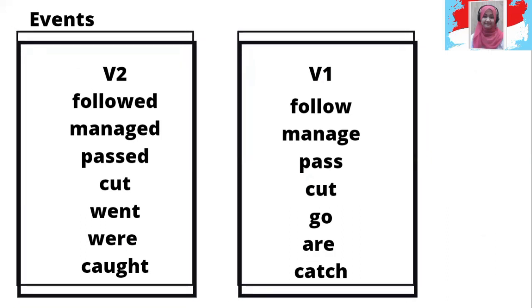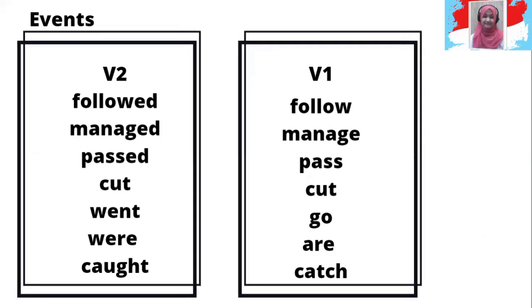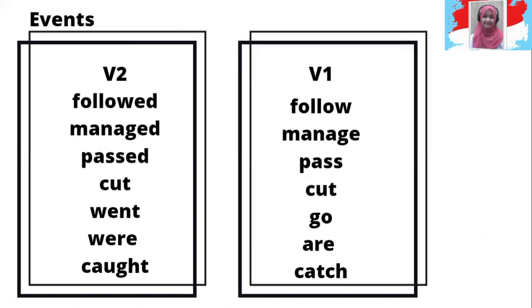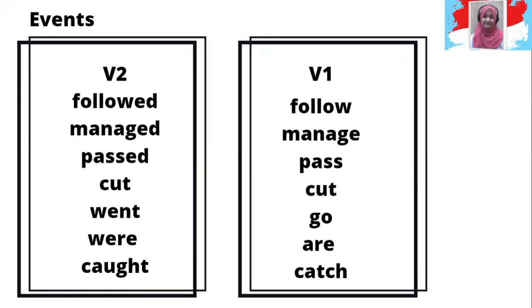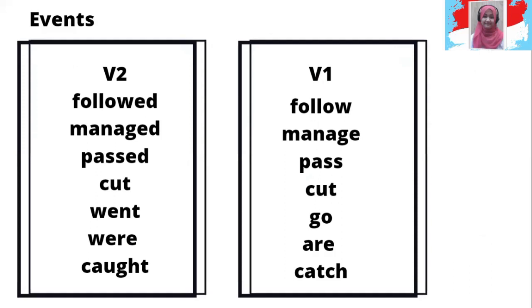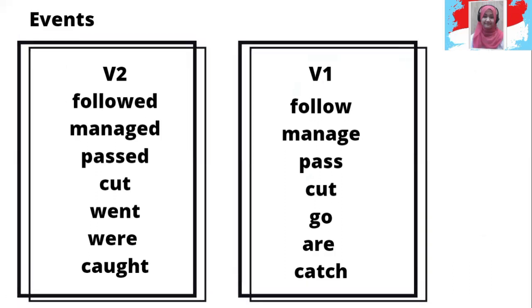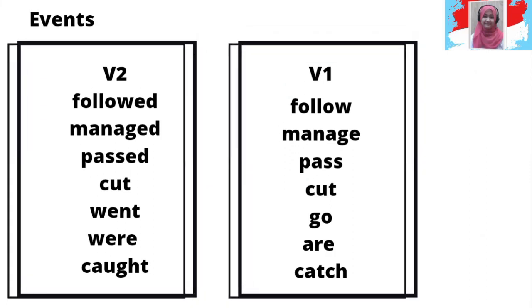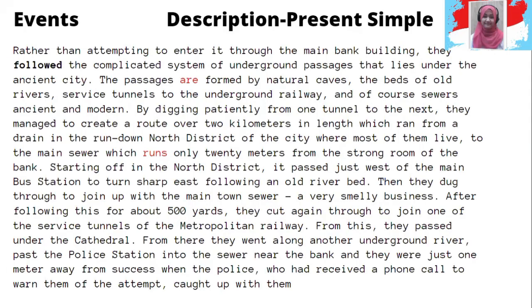Dan jangan lupa untuk dibaca kalimatnya secara utuh. After that, I'd like you to show the verb base form — kata kerja bentuk lampau tadi berasal dari kata kerja apa. Followed — follow. Managed — manage. Cut — cut. Went — go. Were — are. So you can say: the base verb of 'followed' is 'follow', the base verb of 'went' is 'go', and so on. Apabila kalian menemukan ada bentuk present simple, kalian juga bisa tunjukkan mengapa ada present simple di dalam teks tersebut.